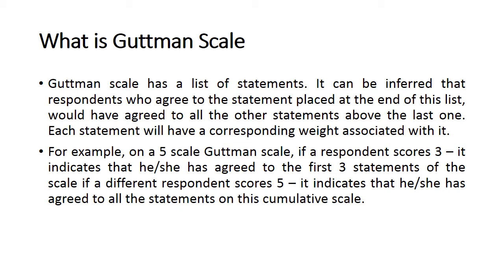The Guttman scale is a list of statements or questions. From beginning to end, respondents read each statement and answer yes or no, or agree or disagree. Each statement has a corresponding weight: yes equals one and no equals zero. In a five-item scale, if a respondent ticks yes three times and no twice, the score is three — meaning they agreed to three statements.